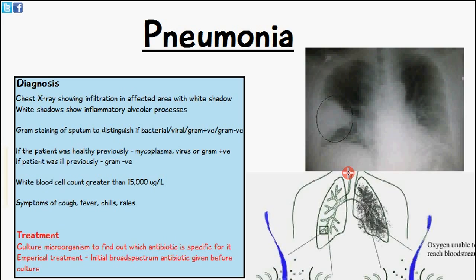We combine this by checking a blood sample. If the white blood cell count is 15,000 per microlitre, then that is a sign of acute pneumonia. The symptoms will also be cough, fever, chills, and rales.